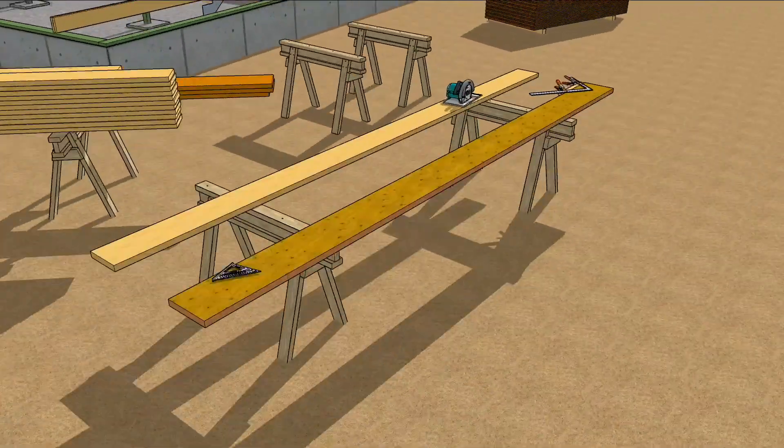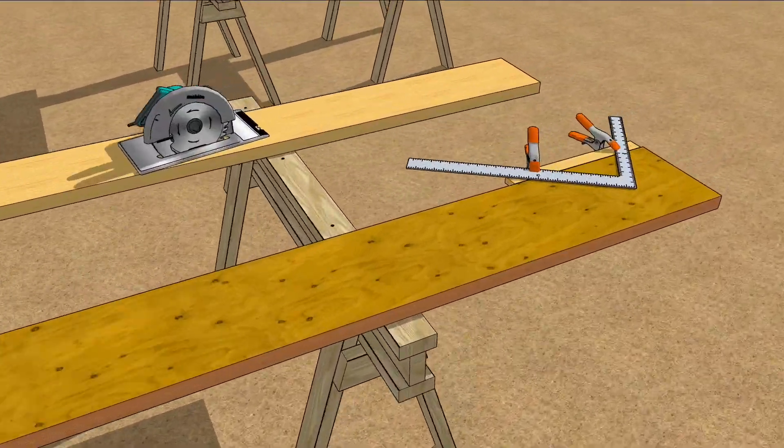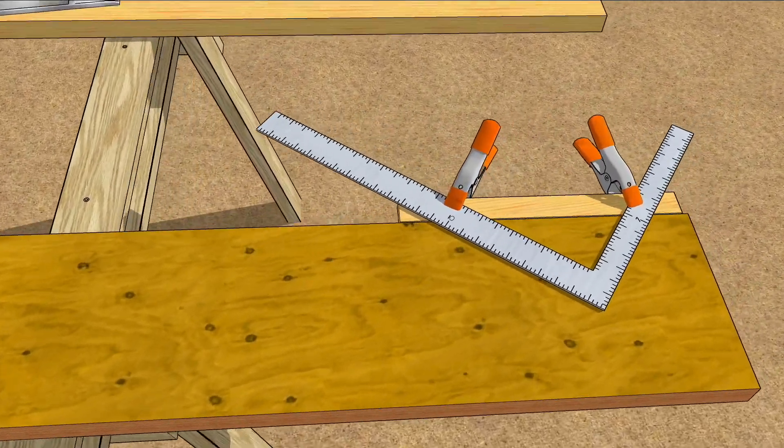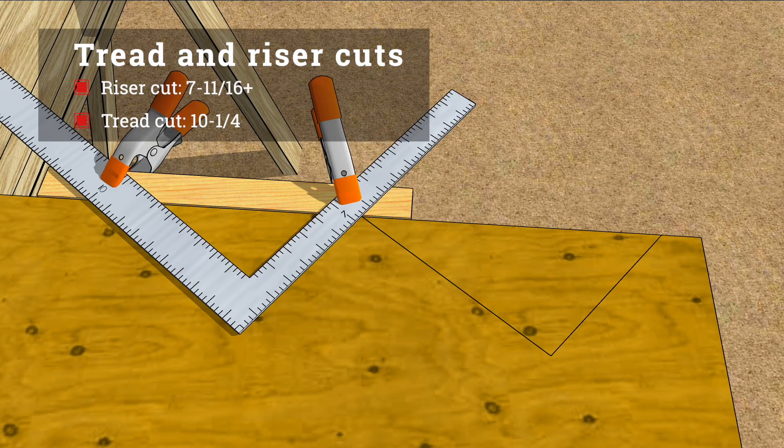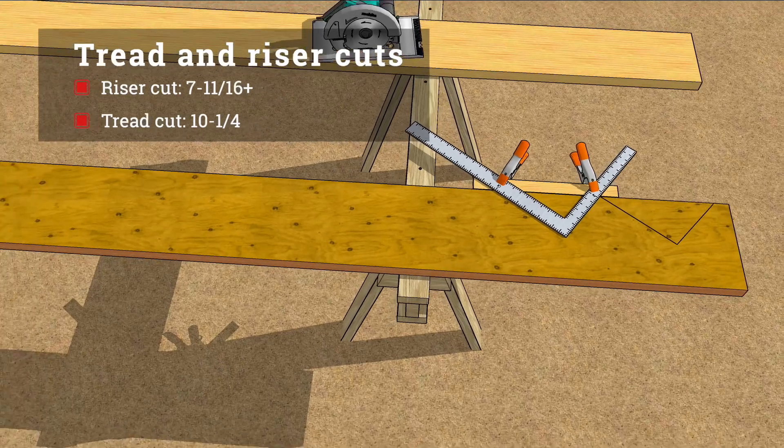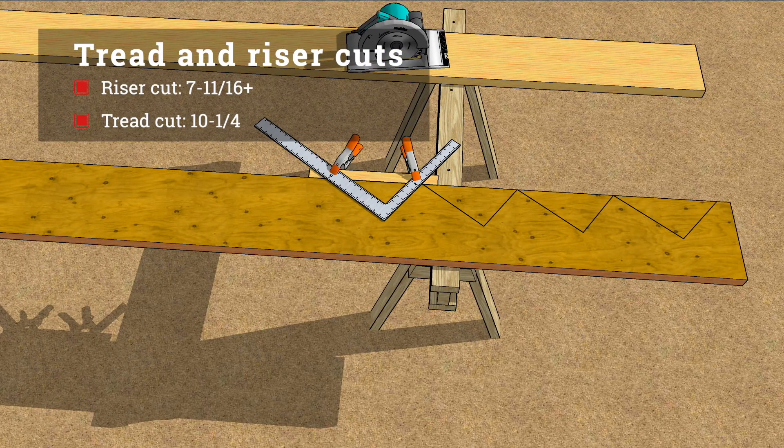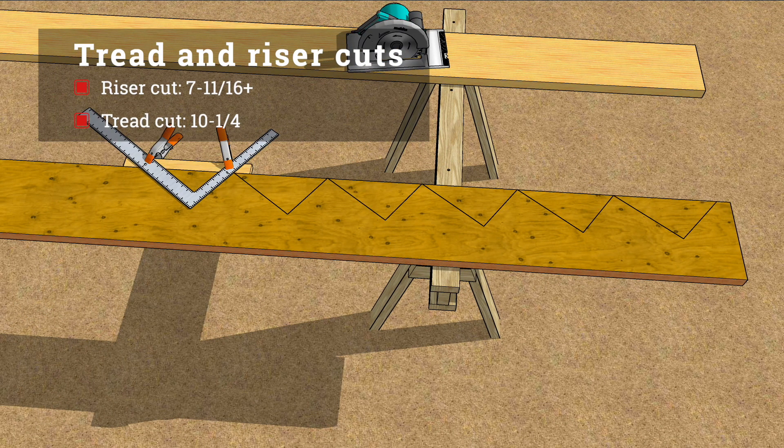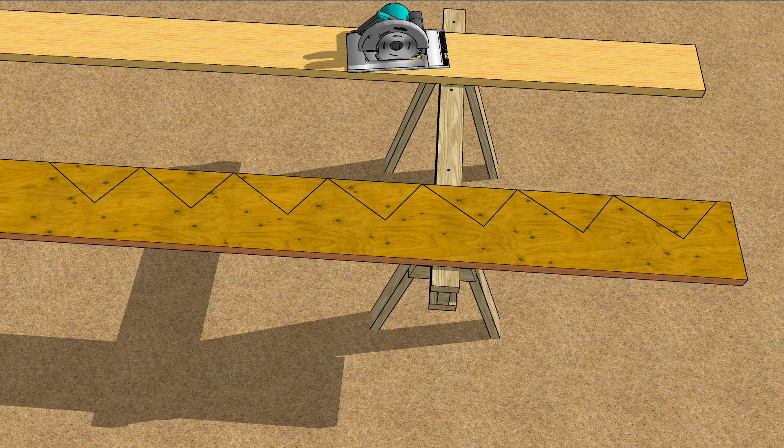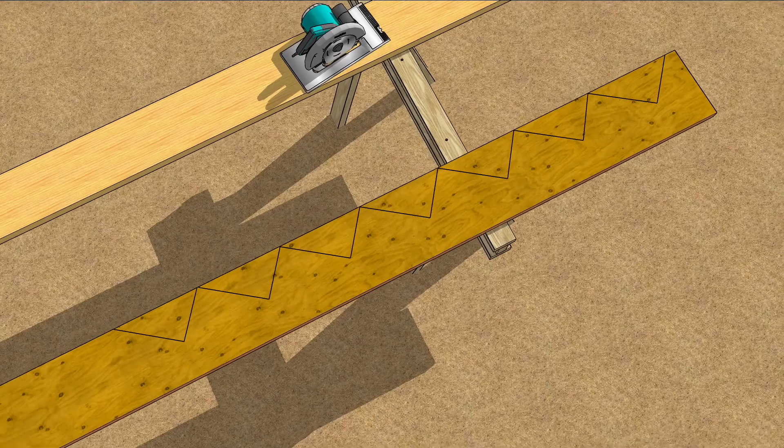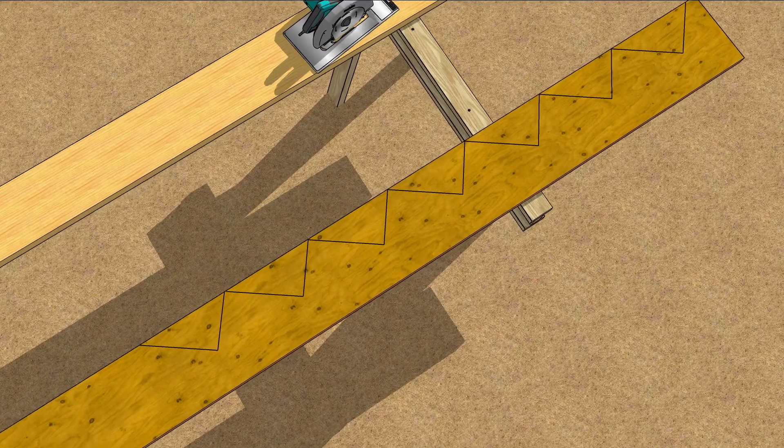A down and dirty way to mark these off is to clamp a scrap of stock to a framing square intersecting those two numbers. Scribe lines along the outer edge of the framing square to indicate the tread and riser cuts. Continue stepping off the marks until you've drawn the appropriate numbers of treads and risers. If it looks funny, it is. But when you tilt your head a little bit, you'll see the stairway emerging.